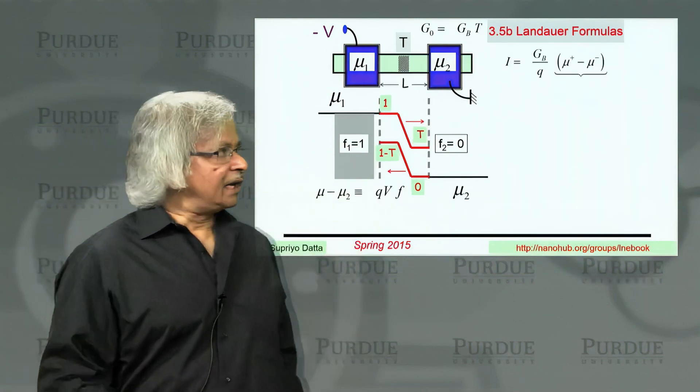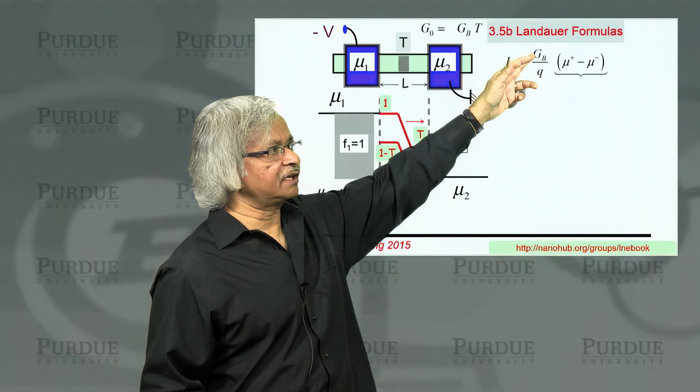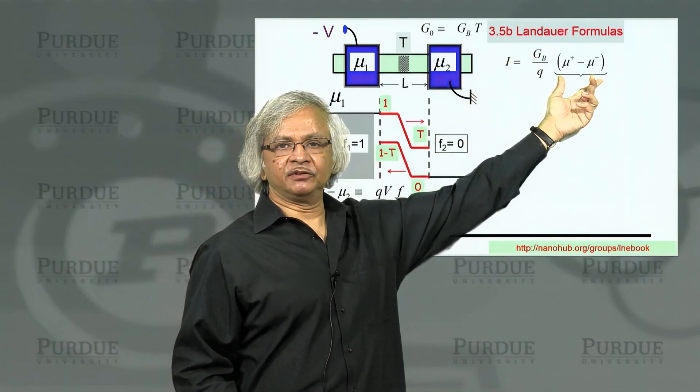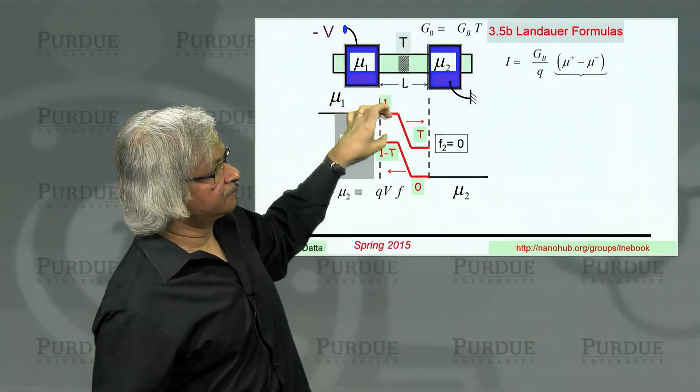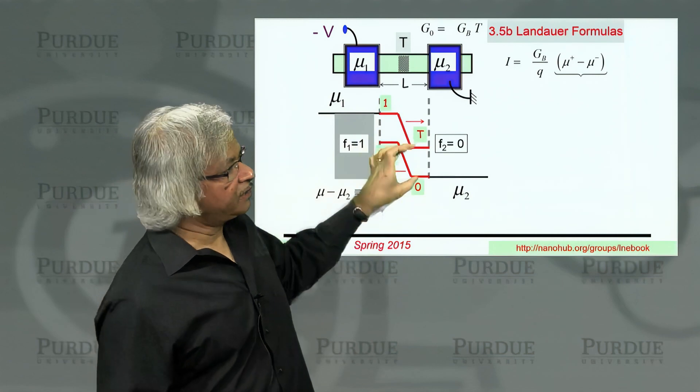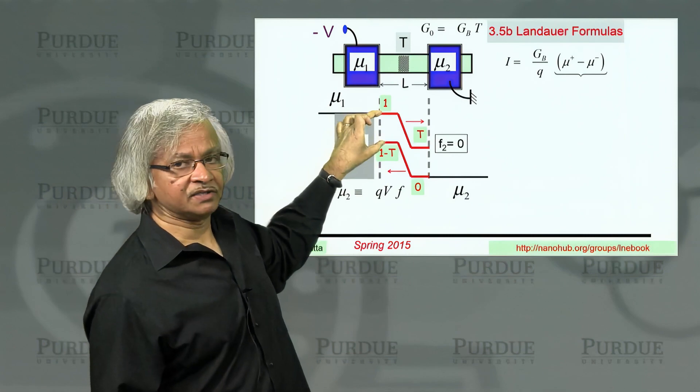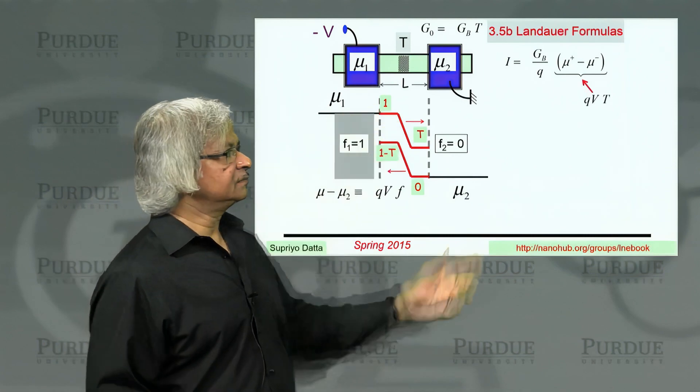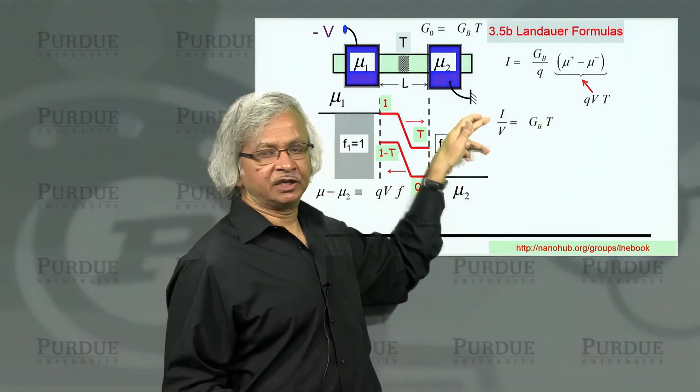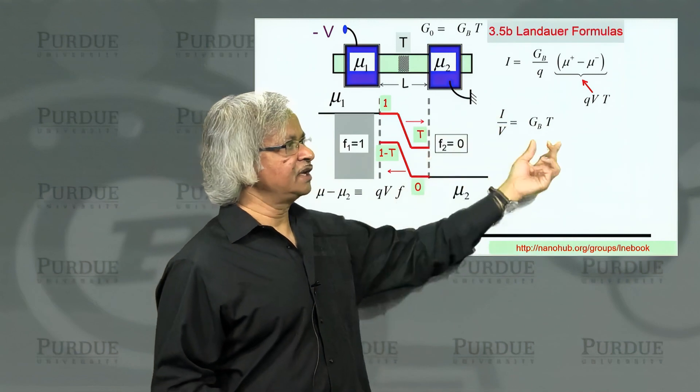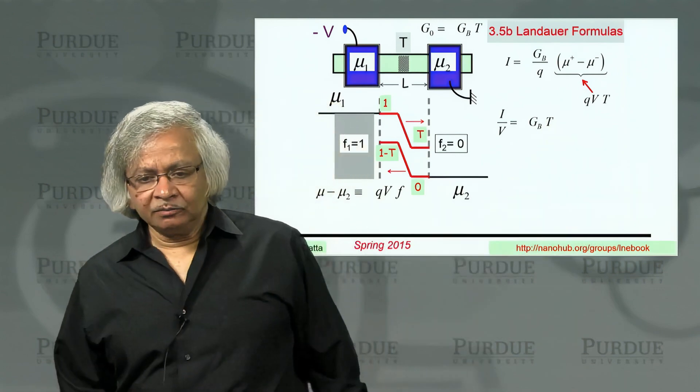What is the current then? The current is, as we discussed in an earlier lecture, the ballistic conductance times the separation of quasi-Fermi levels. And the separation of quasi-Fermi levels is constant everywhere. You can look at any point - here one is T, the other is zero; here one is one, the other is one minus T. So the difference is always T. If you put that in, then you get the current as proportional to the voltage, and current divided by voltage is the ballistic conductance times the transmission.